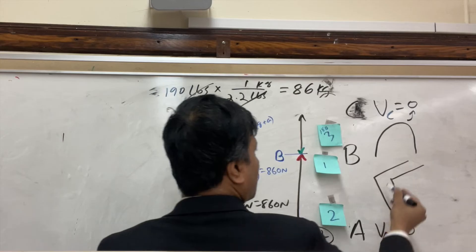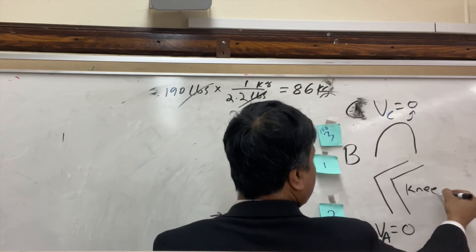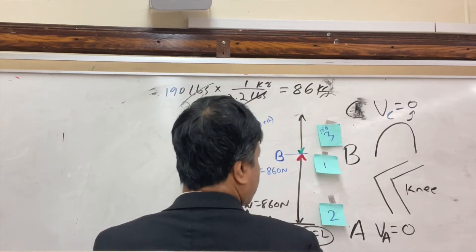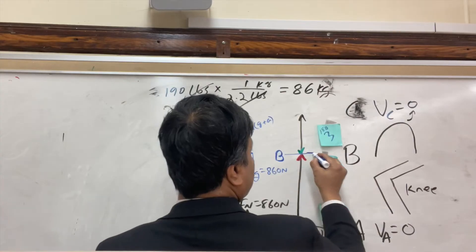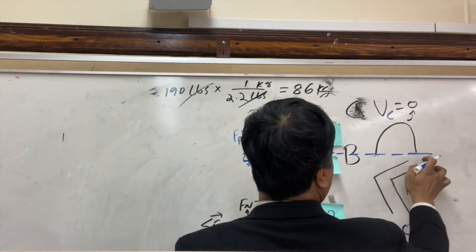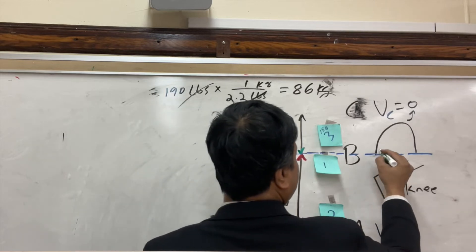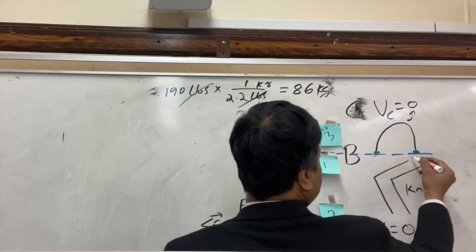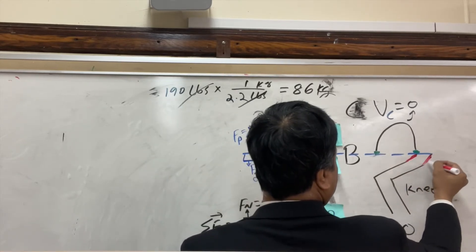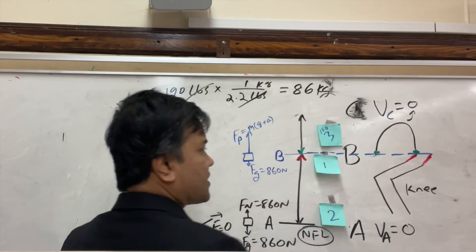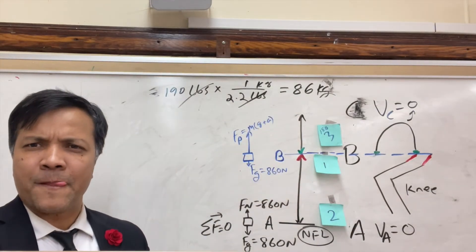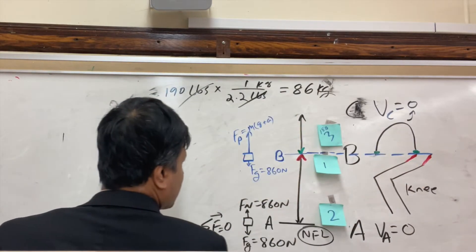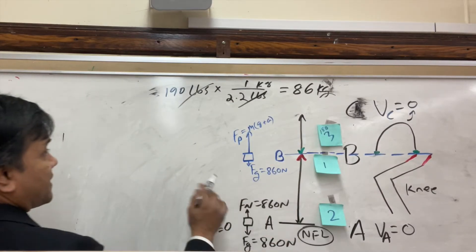At location B, you go from bending to straight and take off. This is the green-to-red transition moment — the instant you leave the ground. We'll use this setup for problem number one.